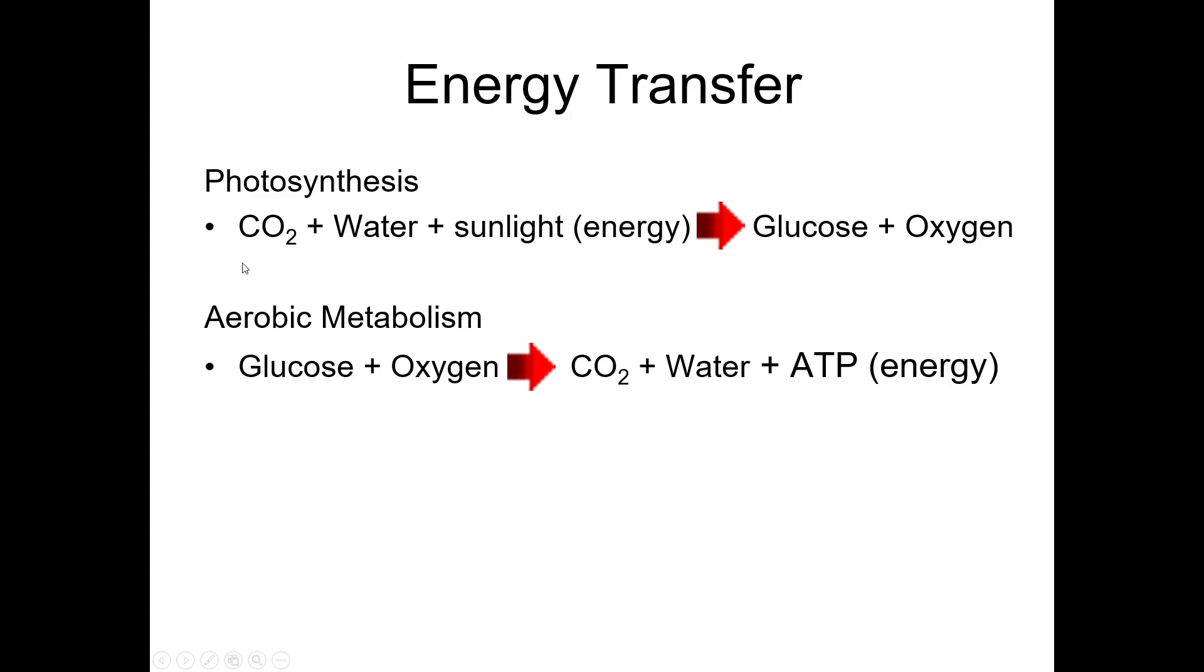So for example, photosynthesis uses carbon dioxide and water and aerobic metabolism produces carbon dioxide and water, so those cancel out. Photosynthesis produces glucose and oxygen, aerobic metabolism uses glucose and oxygen, so those cancel out.